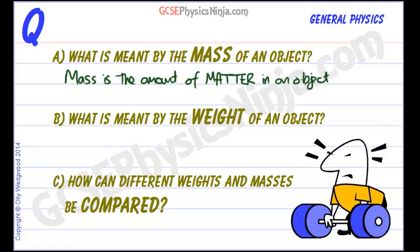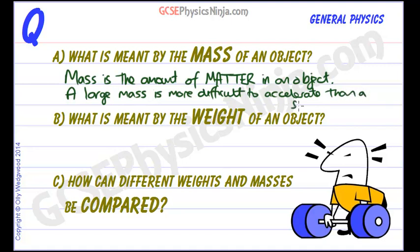So mass is the amount of matter in an object. And a large mass—it's worth noting here that a large mass is more difficult to accelerate than a smaller mass.